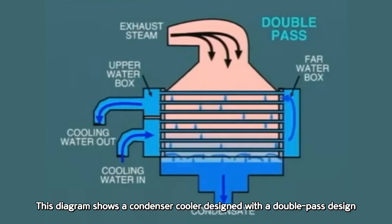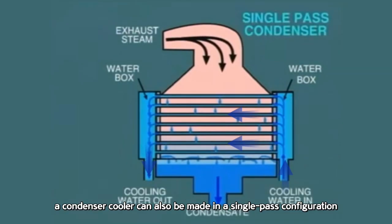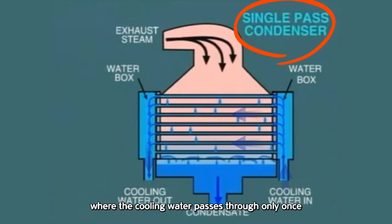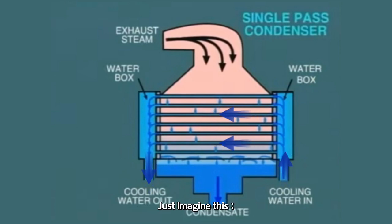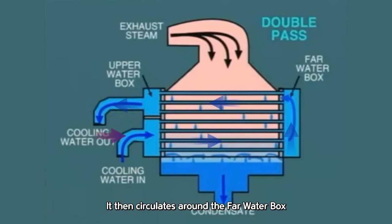This diagram shows a condenser cooler designed with a double-pass design. Depending on its design, a condenser cooler can also be made in a single-pass configuration, where the cooling water passes through only once. Now, let's continue with the explanation. Just imagine this. The system is currently in a vacuum state, and the cooling water enters through the pipeline at bottom section. It then circulates around the far water box before exiting through the cooling water outlet.